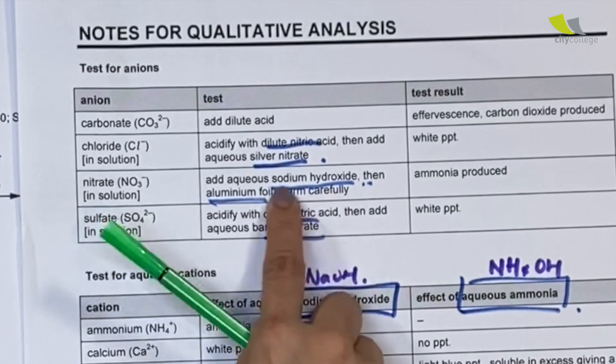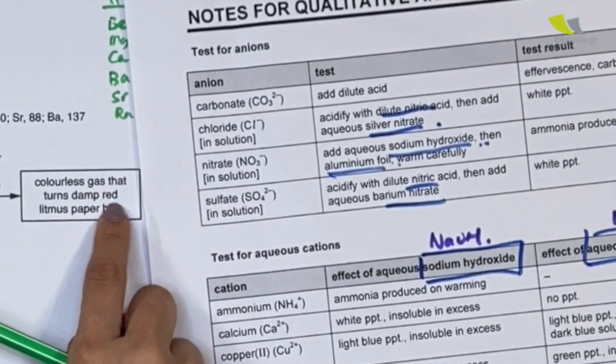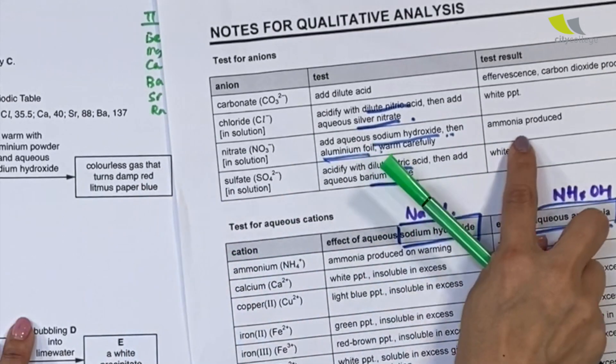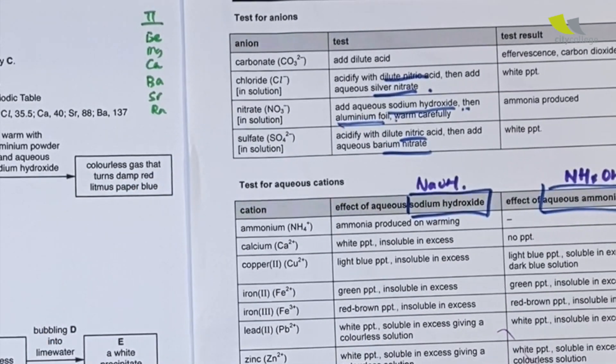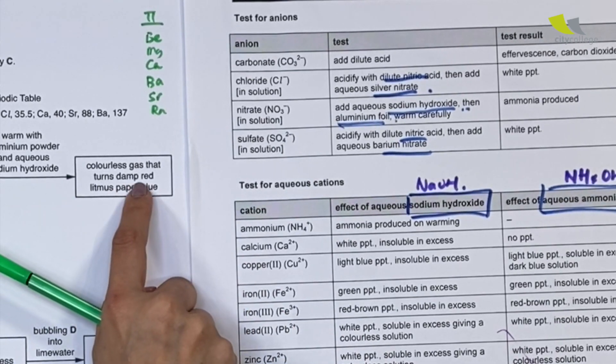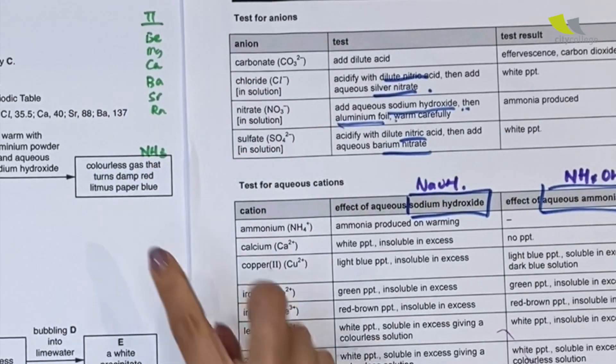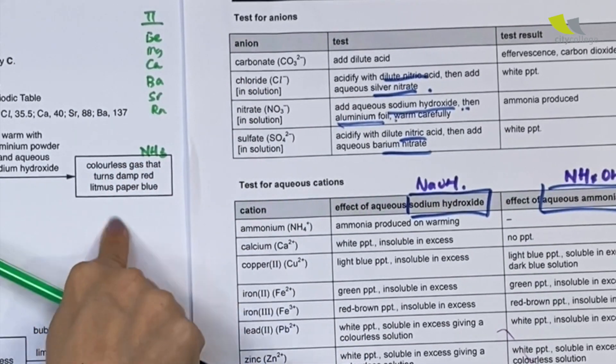Sodium hydroxide, aluminum powder with sodium hydroxide—it seems like they attach all nitrate here. Colorless gas that turns red litmus paper blue shows that ammonia is present here. So I quickly write down ammonia, even though it's not required.